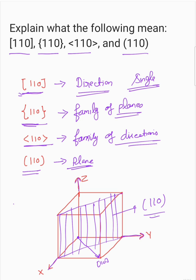Now I think you can understand: if you have the square bracket it suggests a single direction, if you have the curly bracket it says the family of planes, if you have an angle bracket it is a family of directions, and if you have an open bracket that is a single plane.